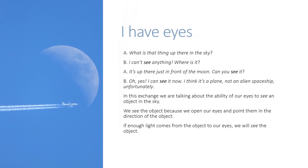Here is an example: 'What is that thing up there in the sky? I can't see anything. Where is it?' 'It is up there, just in front of the moon. Can you see it?' 'Oh yes, I can see it now. I think it is a plane — not an alien spaceship, unfortunately.' In this exchange, we are talking about the ability of our eyes to see an object in the sky. We see the object because we open our eyes and point them in its direction.